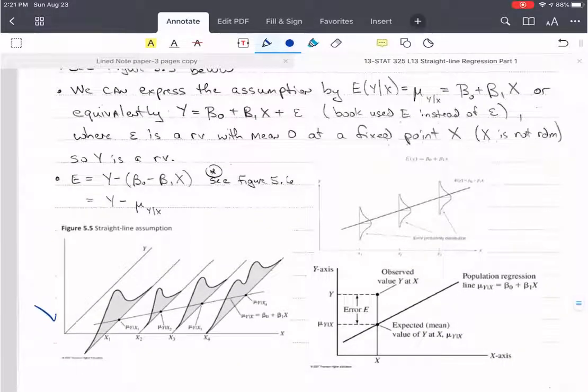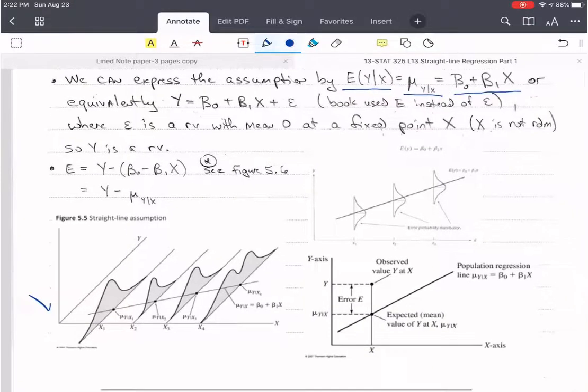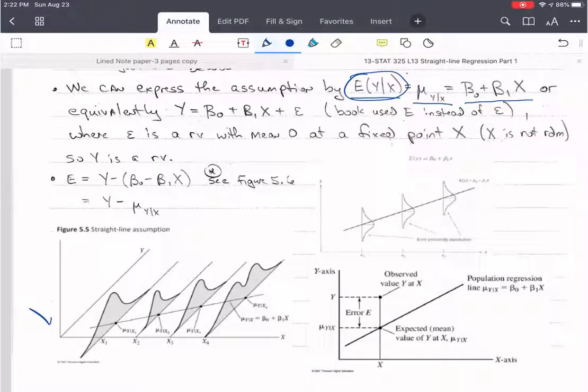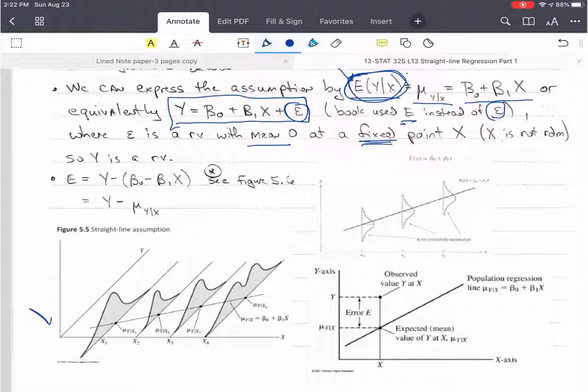And we can express this using this equation. Note that the expected value of y given x is the mean of y given x, and that is beta naught plus beta 1 x. And notice that we have a mean here and we're using expectation. So that's where the statistical portion goes into. This is not a deterministic model, this is a statistical model here because we're talking about the mean of the expected value. But we can equivalently write this as a statistical model with e, the error, explicitly in there. And that is y equals beta naught plus beta 1 x plus epsilon. And the book uses capital E, but capital E is often used for expectation, so I don't like to. So I'll use this little epsilon there. And epsilon is a random variable. It has a mean of zero at a fixed point x. In other words, x is not random, x is fixed. So this means that y is a random variable.